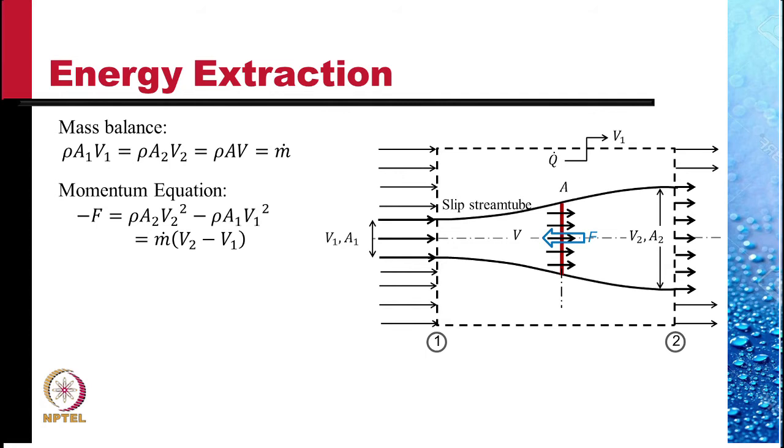The mass balance through this steam tube gives rho A1 V1 is equal to rho A2 V2 and we denote it with m dot.